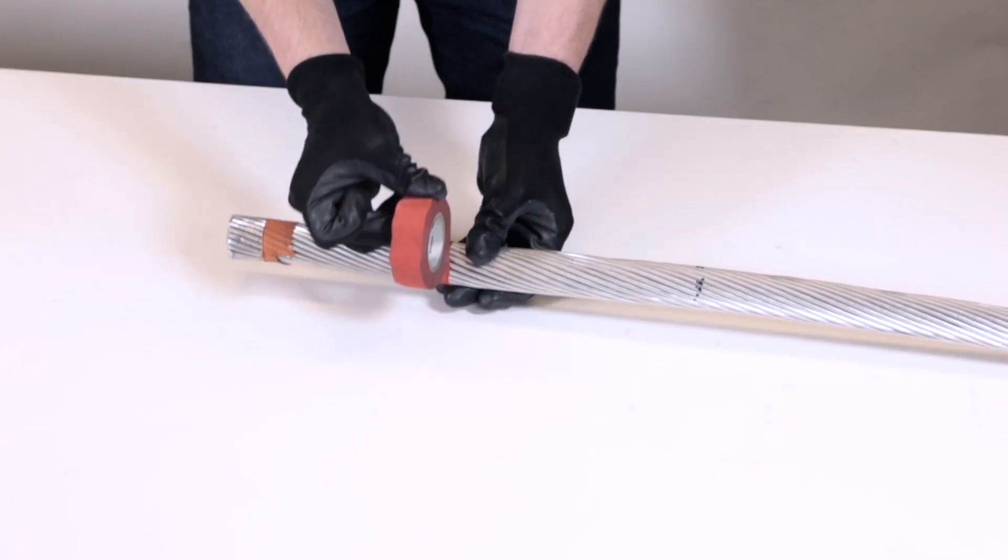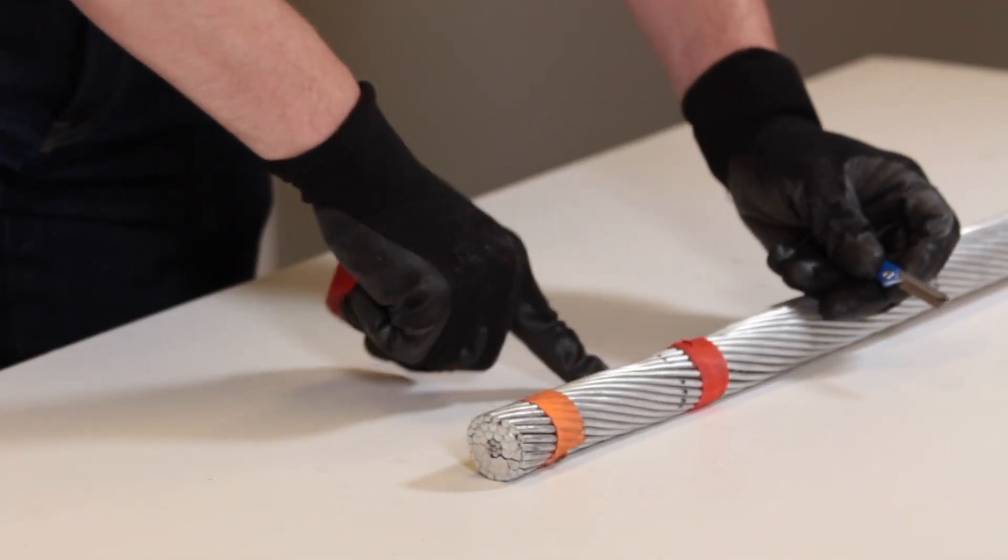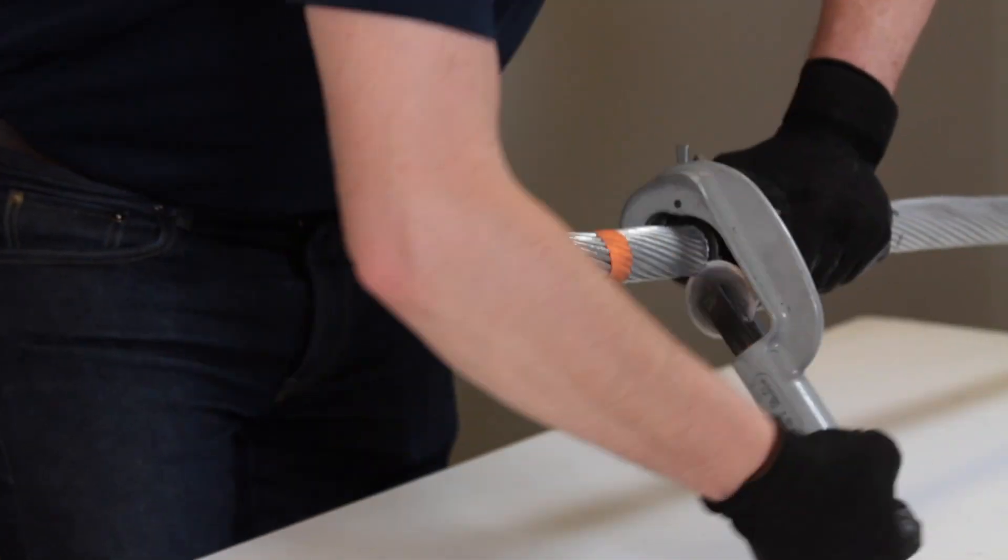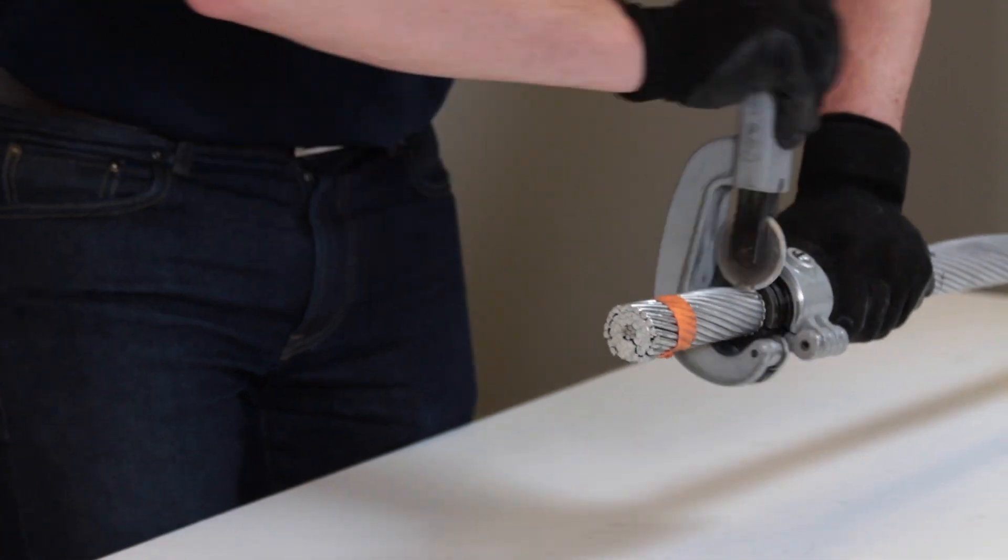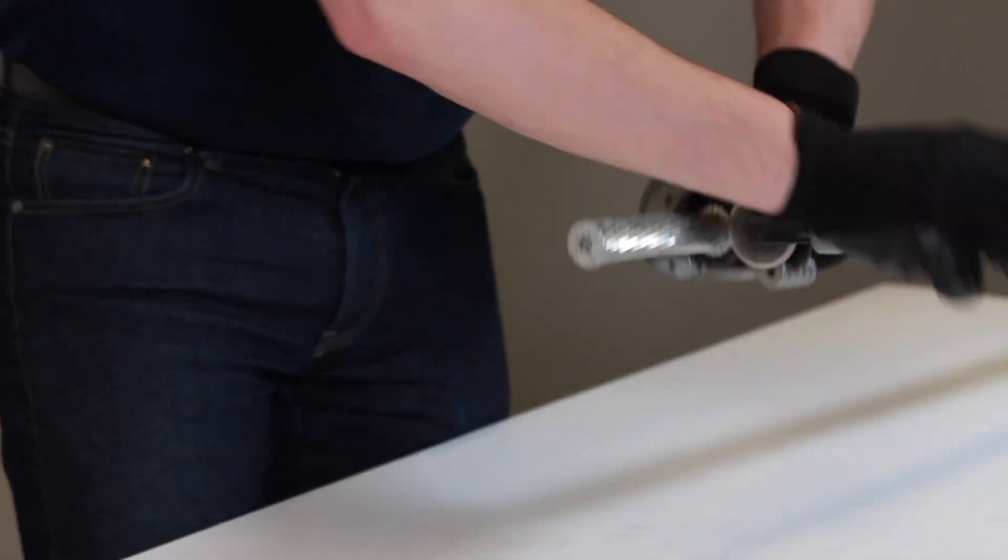Apply tape approximately one inch back from the cutting mark to secure the aluminum strands and maintain the conductor diameter after the cut is made. Cut the outer aluminum strands at the cutting mark to expose the steel core. Take care not to damage the steel core strands during this process.